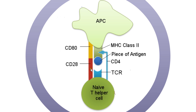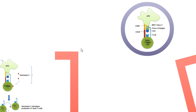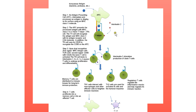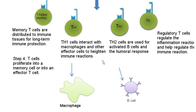T helper cells require a second signal to be activated as well. The CD28 marker on the T cell must recognize CD80 on the APC. Once both signals or recognitions are achieved, the T cell can become active. An active T cell is now able to bind to interleukin, which causes the T cell to proliferate and differentiate into memory T cells and effector T cells. The memory cells go to the secondary lymphoid tissue to help with future infections.